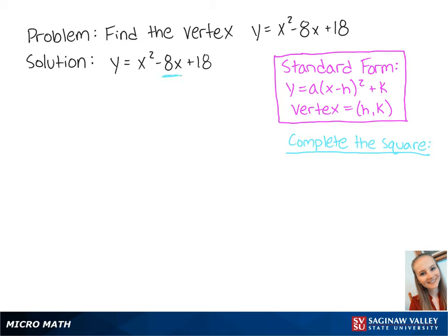To complete the square, we need to take the coefficient of x and multiply it by 1 half. So 1 half times negative 8 is equal to negative 4. Now we take negative 4 and we square it, which equals 16.